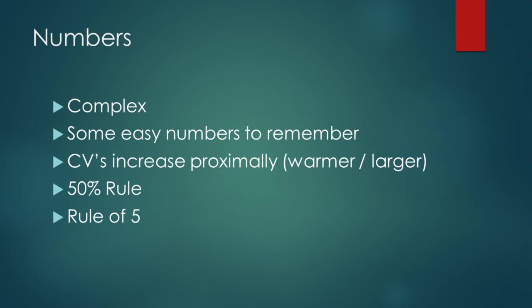Now for numbers. Conduction velocities increase the more proximally you stimulate because nerves are warmer and larger. We also have a 50 percent rule: if there is a reduction of more than 50 percent on one side compared to the other, that's abnormal. And we have the rule of fives as an easy way to remember key values.